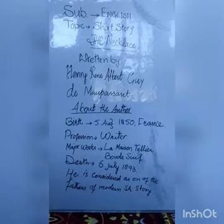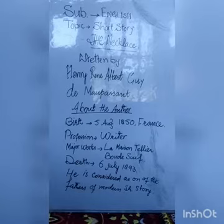We will talk about the theme, central idea, and other important things of the short story at the end. Let's first learn the summary. The title of the short story is 'The Necklace.' A necklace is a piece of jewelry that women wear around the neck. Here it symbolizes destiny for Matilda. Matilda is the main character of this short story.